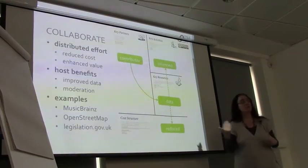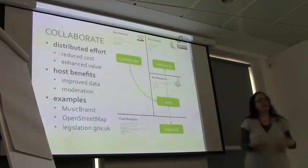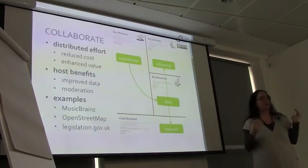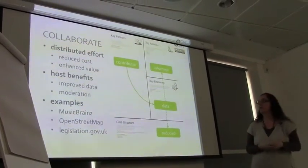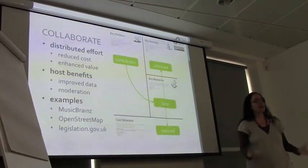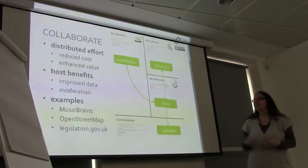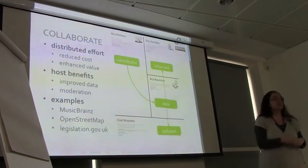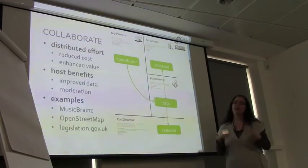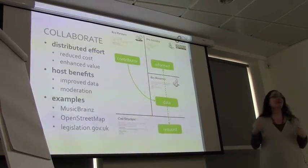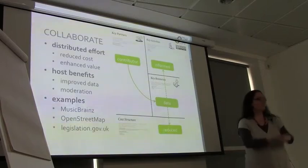The hoster of the data in this kind of collaborative model gets two kinds of benefits: first, they get the improved data to use themselves, and second, they benefit from being able to direct the activity of the community — they are the ultimate arbiter about what goes into the data and who can contribute. Examples of this that work currently are MusicBrainz, which is a catalogue of information about music, artists and albums developed through collaborative activity. So is OpenStreetMap. And there's Legislation.gov.uk, a project I worked on, where contributors help to enhance the value of the data used as part of the business.